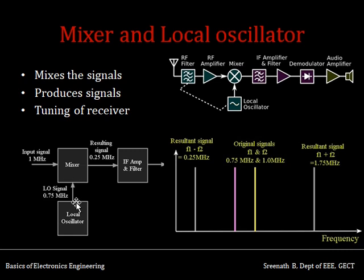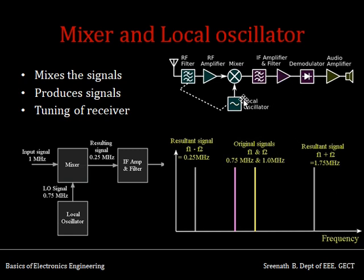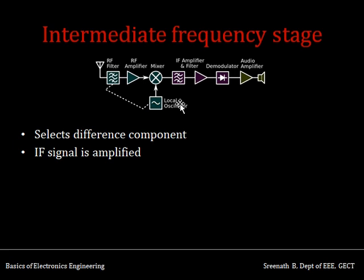When you mix the 1 MHz and 0.75 MHz signals, taking the sum and difference, you get two sets of signals: the difference f1 minus f2 = 0.25 MHz, and the sum f1 plus f2 = 1.75 MHz. The original signal components are removed. At the intermediate frequency stage, the difference component is selected — the higher frequency component is omitted. The IF stage acts as a band pass filter, allowing only a certain range of frequencies to pass through.